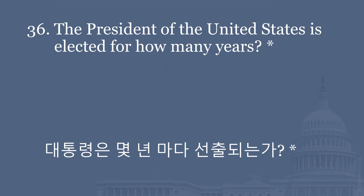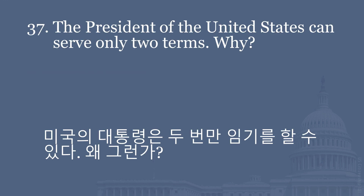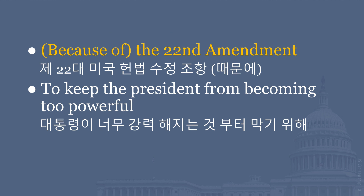The President of the United States is elected for how many years? Four years. The President of the United States can serve only two terms. Why? Because of the 22nd Amendment. To keep the President from becoming too powerful.